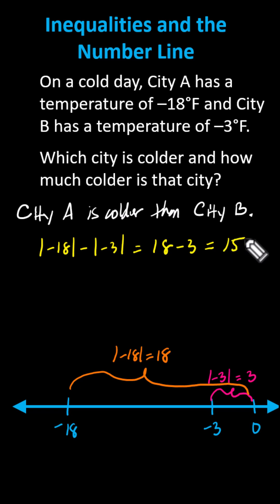This indicates there's 15 degrees between negative 18 degrees and negative three degrees. We now know city A is 15 degrees colder than city B. I hope you found this helpful.